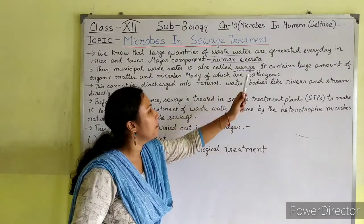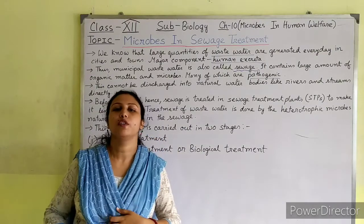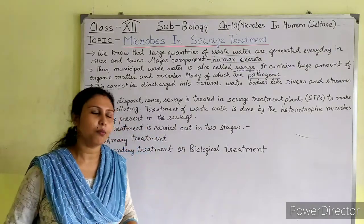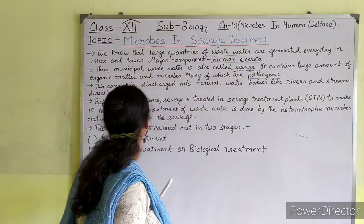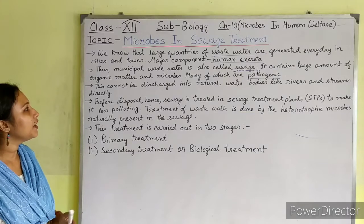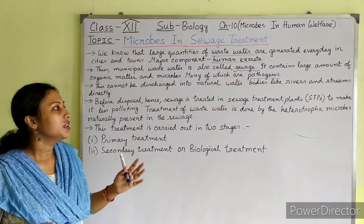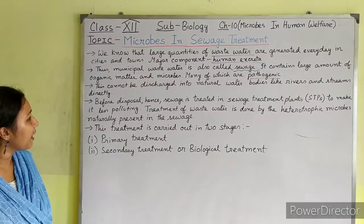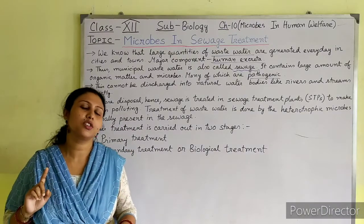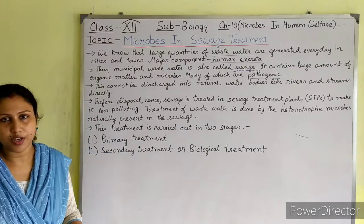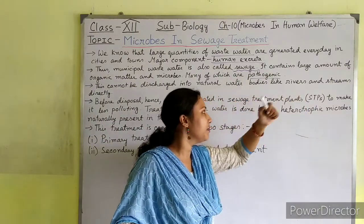Many of these microbes are pathogenic, meaning they cause harm or diseases in our body. Because sewage contains so much human excreta, organic matter, and pathogenic microbes, it cannot be discharged directly into natural water bodies like rivers and streams.